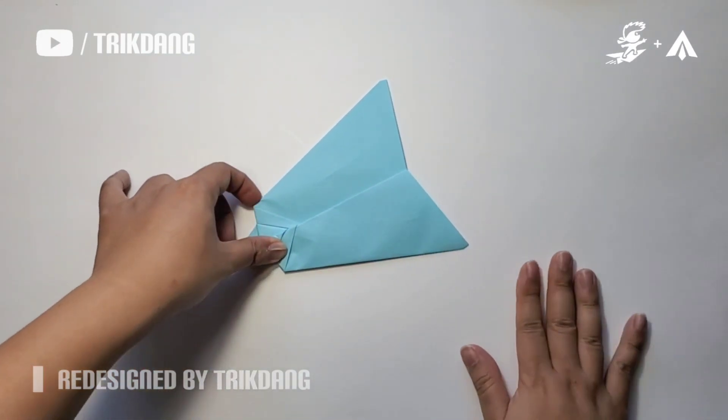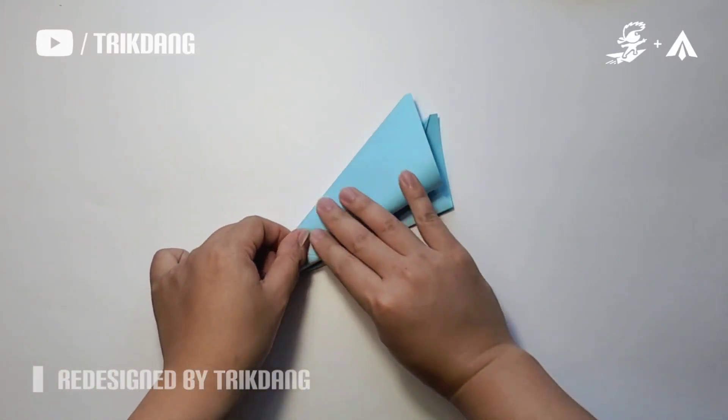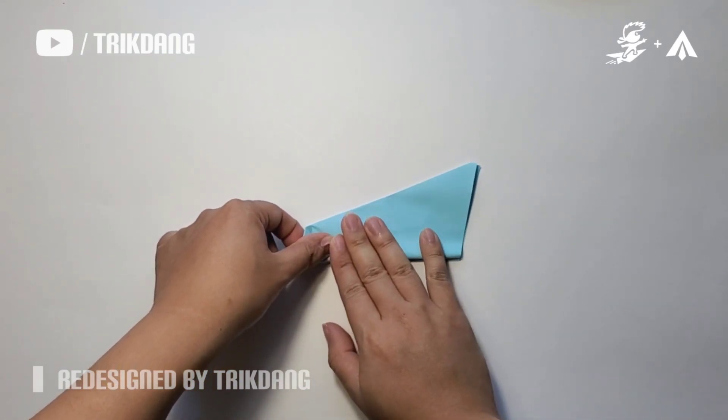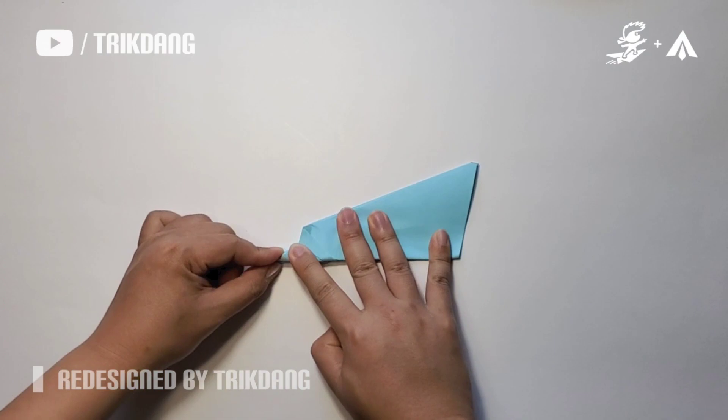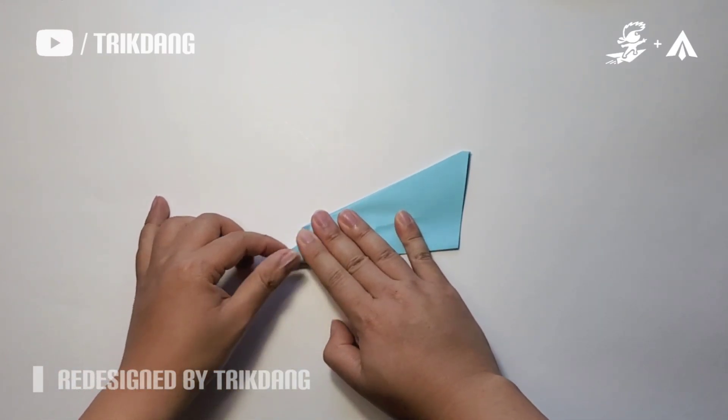Repeat the same fold for the opposite side. Curve it and fold it down. This plane flies very hard and very far.